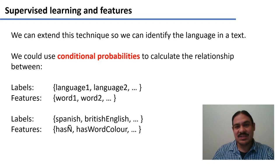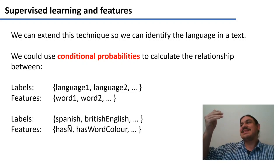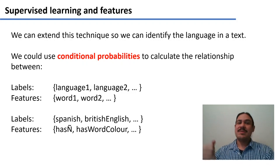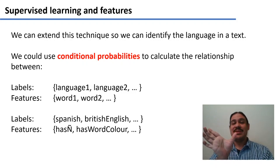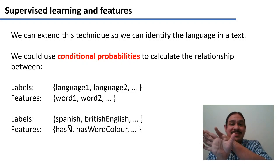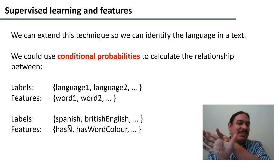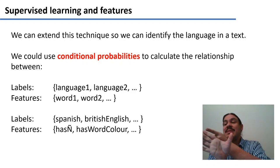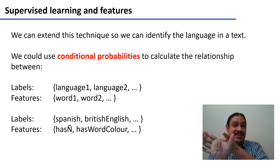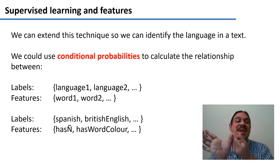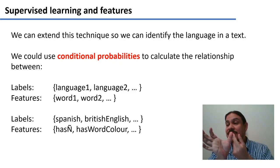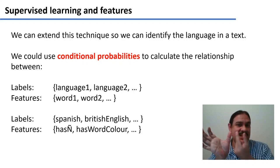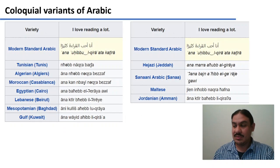We could extend this technique to identify the language in a text. For example, given a document in some language, you could design a set of features — for example, whether the document has a curly N, an N with a curl on top. If it has it, the document is likely written in Spanish. Maybe the document has the word color with a U in it — if it does, maybe the document is from British English. So we're going to use conditional probabilities to try to associate features of languages with the language they might be written or spoken in.